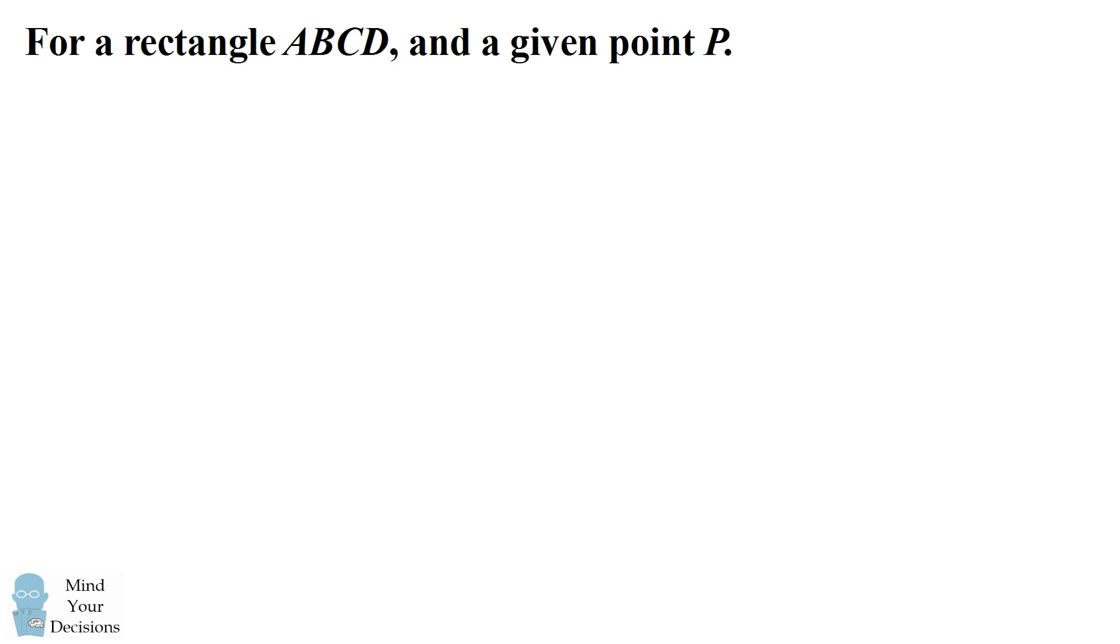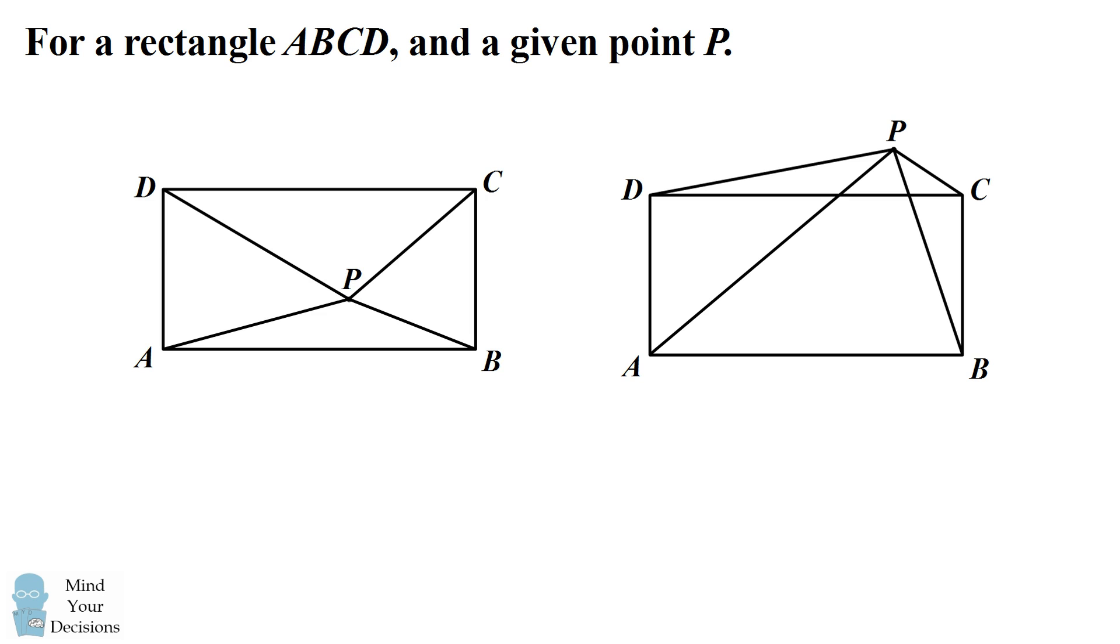There's a special equation that always works for rectangles and a given point P. It doesn't matter whether the point is inside the rectangle or outside the rectangle. It is always true that AP squared plus CP squared is equal to BP squared plus DP squared.